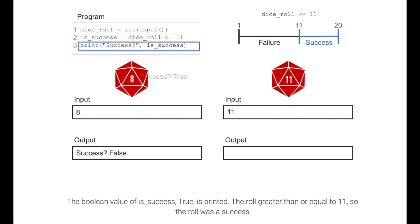The Boolean value of is_success, true, is printed. The roll was greater than or equal to 11, so the roll was a success.